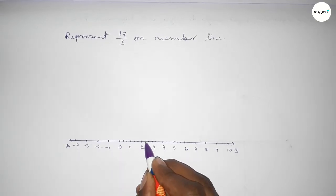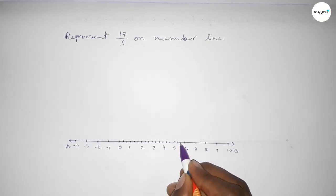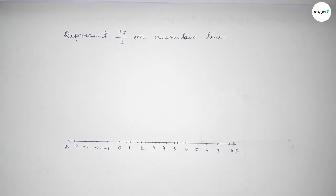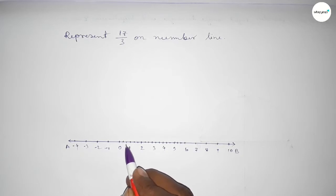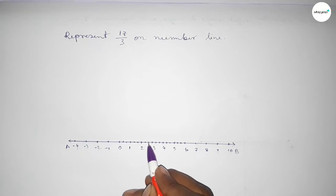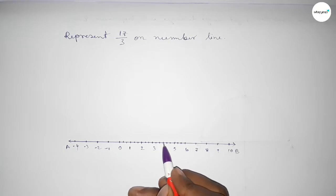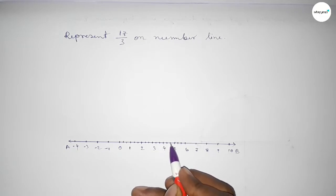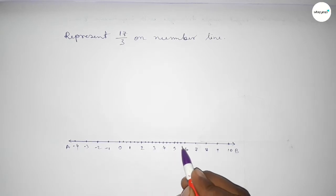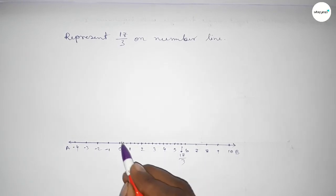Mark the numbers on the line with deep color to understand perfectly. So this is 1/3, 2/3, 3/3, 4/3, 5/3, 6/3, 7/3, 8/3, 9/3, 10/3, 11/3, 12/3, 13/3, 14/3, 15/3, 16/3, 17/3. So this is 17/3 on the number line.